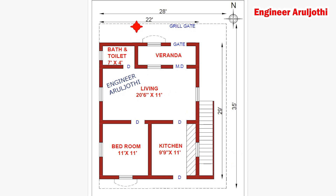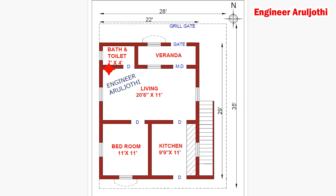We have a septic tank here in the plan. The total area of this house is 28 feet by 35 feet — that gives us the total square footage. This area covers the full construction of the house, and we work with the total square feet here. The total built-up area of the house plan is calculated from these dimensions.